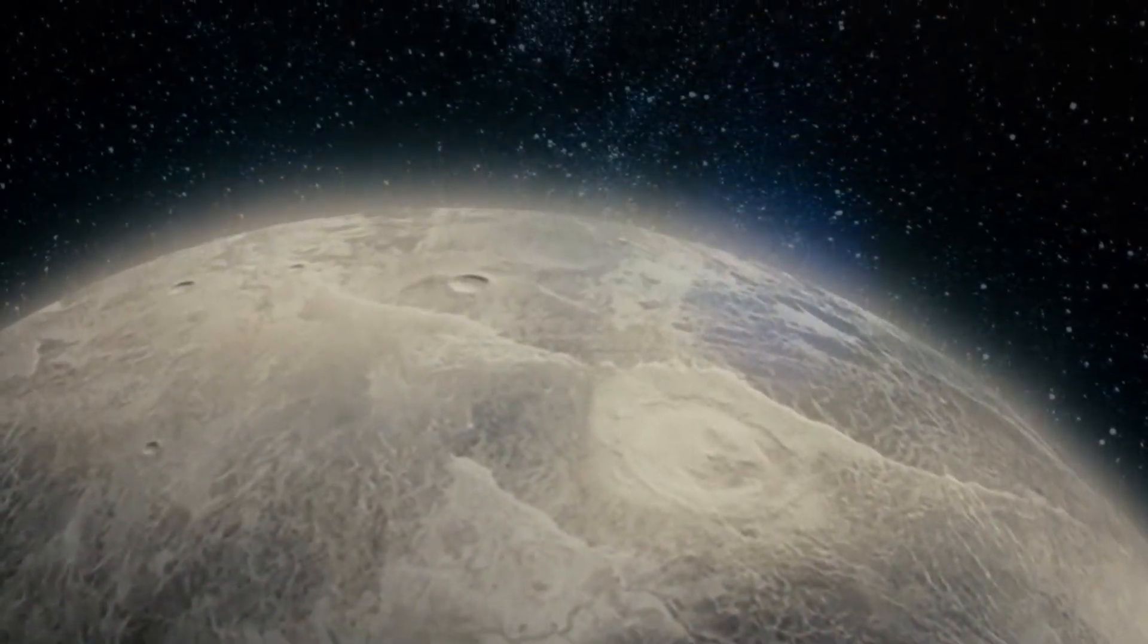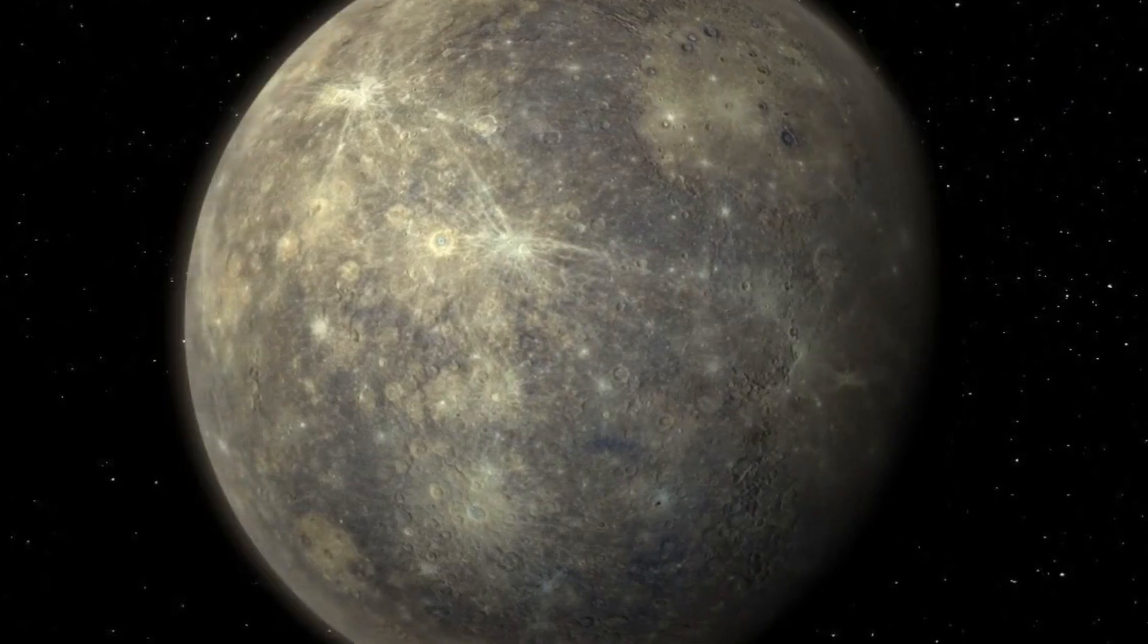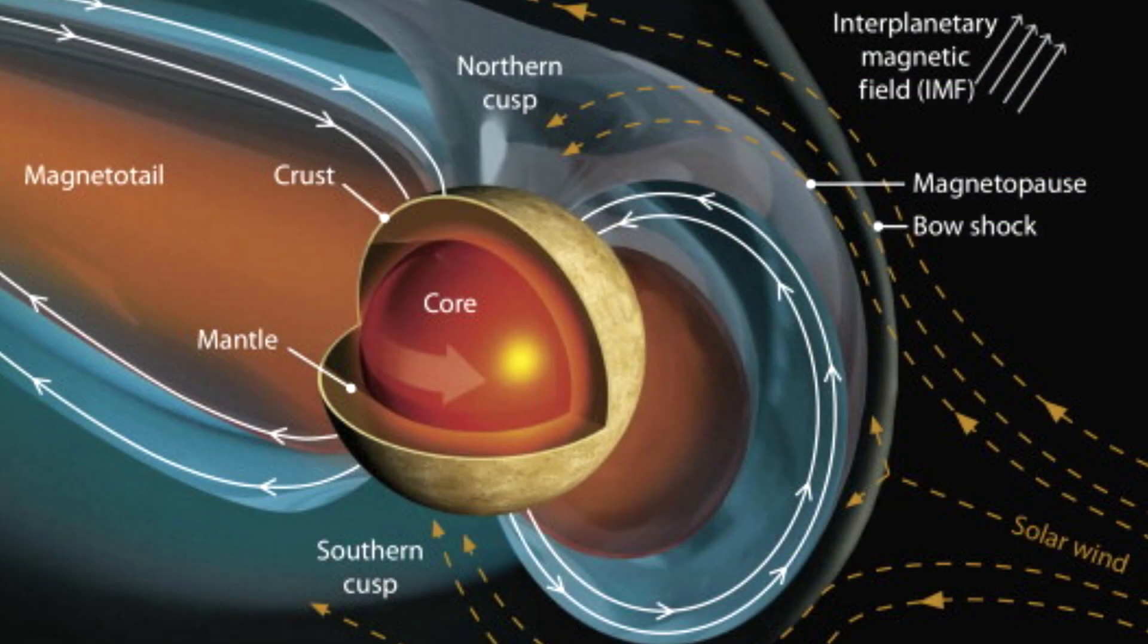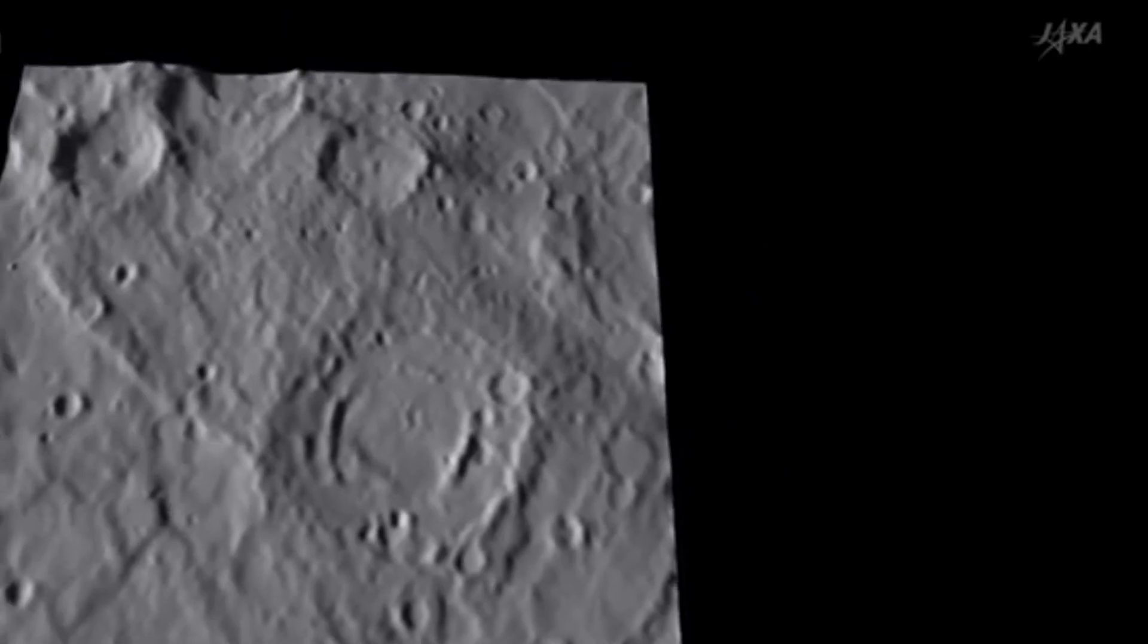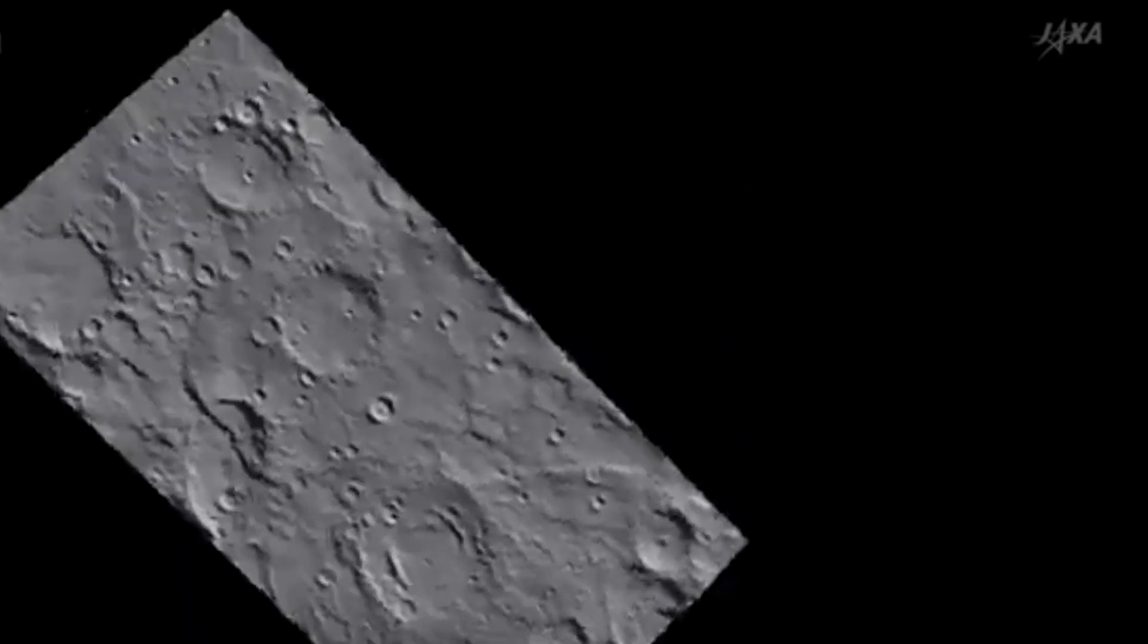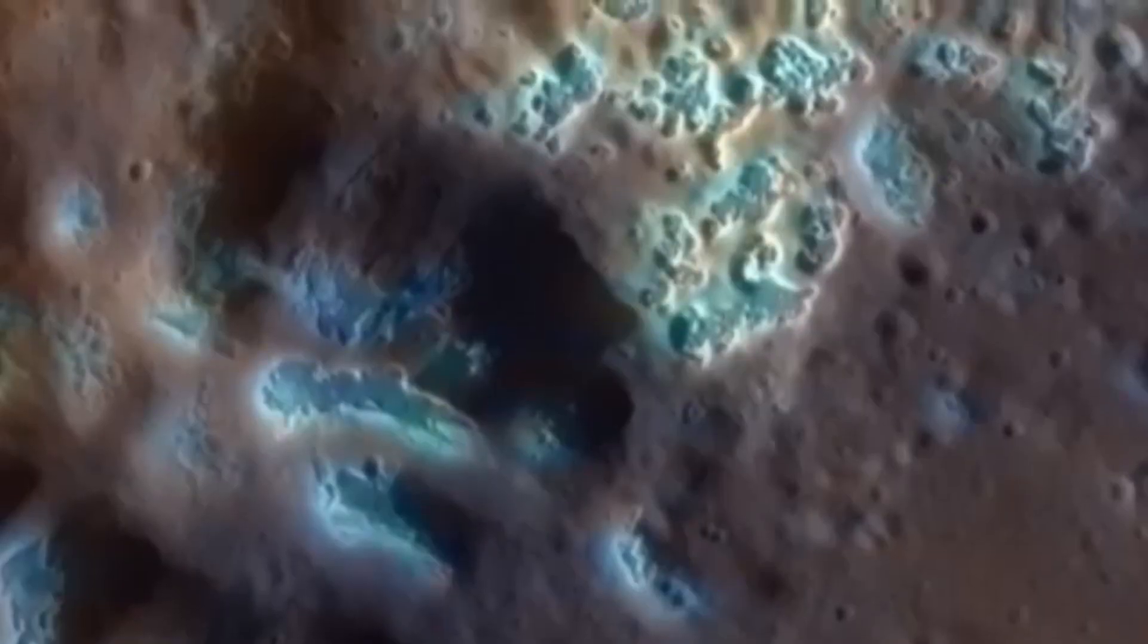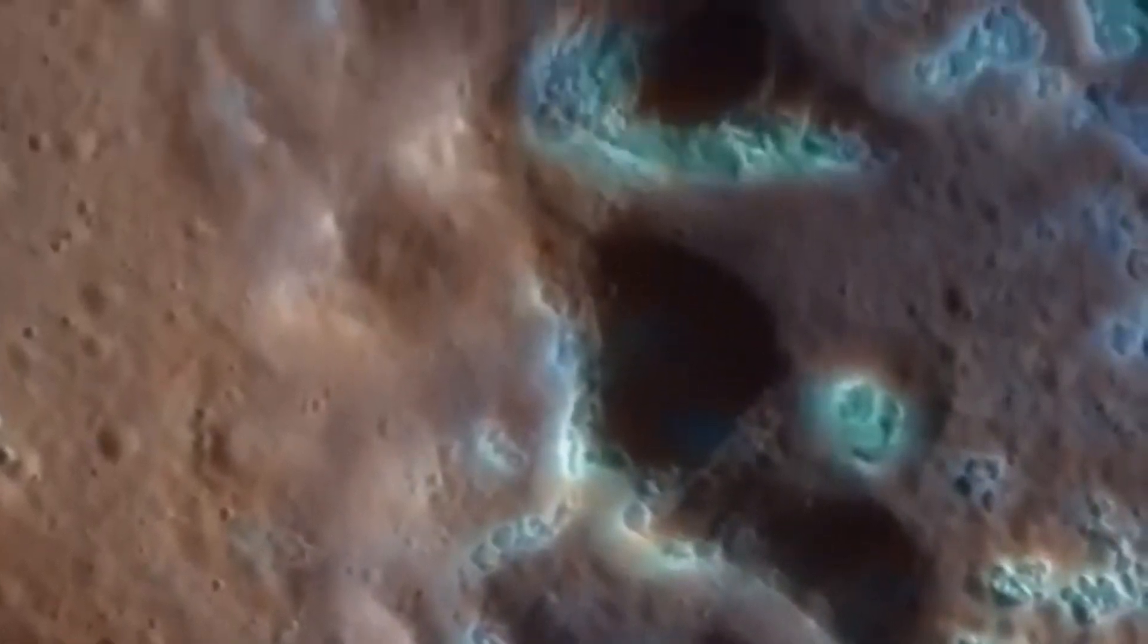This extremely tenuous layer of gases is constantly losing particles to space and replenishing them from various sources. Mercury's exosphere is sustained by the solar wind, radioactive decay, and micrometeorite impacts. In 2020, researchers analyzing data from the Messenger probe found that Mercury's exosphere contains more water vapor than previously believed.